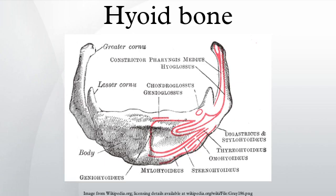The lesser horns are two small, conical eminences, attached by their bases to the angles of junction between the body and greater horns of the hyoid bone. They are connected to the body of the bone by fibrous tissue, and occasionally to the greater cornua by distinct diarthrodial joints, which usually persist throughout life, but occasionally become ankylosed. The lesser cornua are situated in the line of the transverse ridge on the body and appear to be morphological continuations of it. The apex of each cornu gives attachment to the stylohyoid ligament.